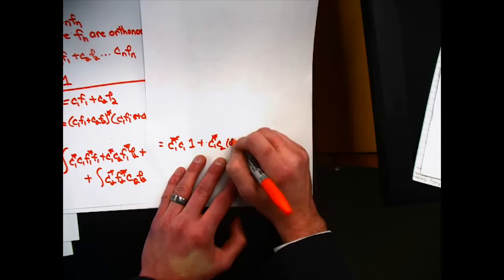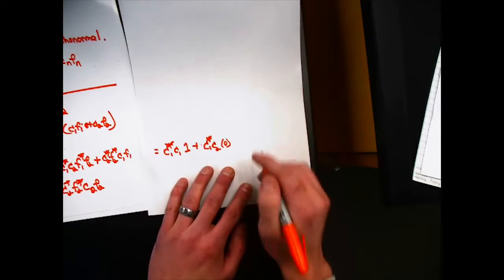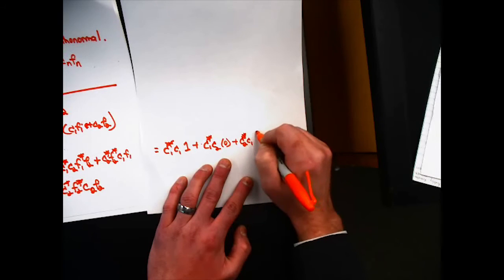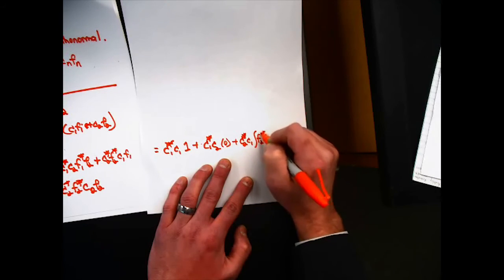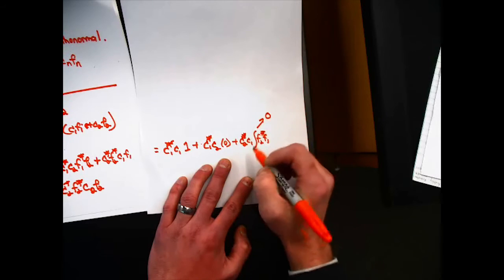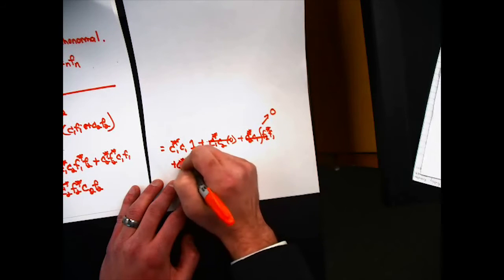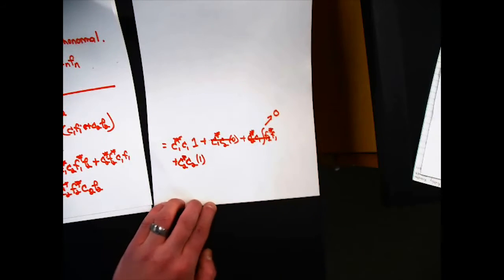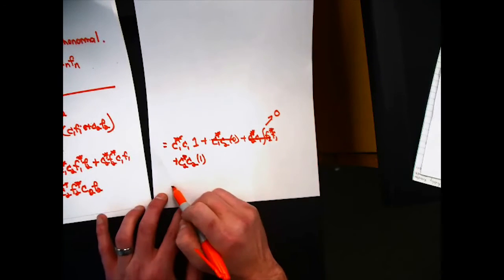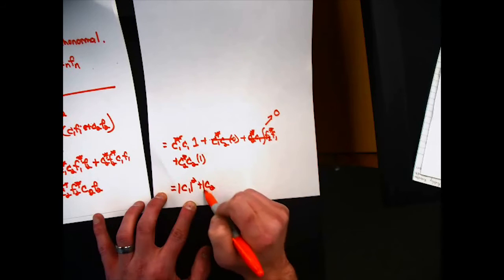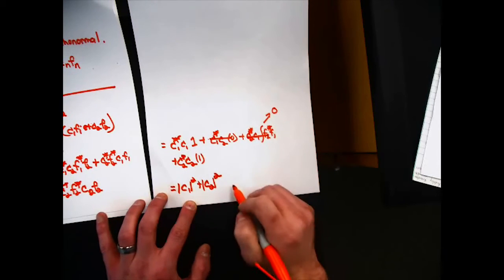Similarly, c2 star c1 times 0, and c2 star c2 times the integral of f2 star f2, and that's also normalized so that's equal to 1. And if it's normalized, that whole thing has to be equal to 1.